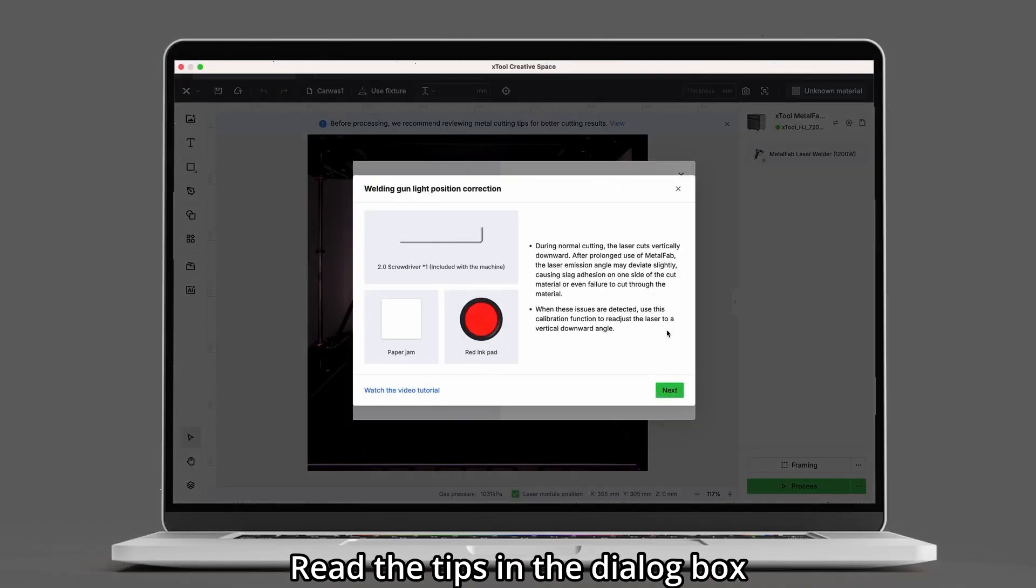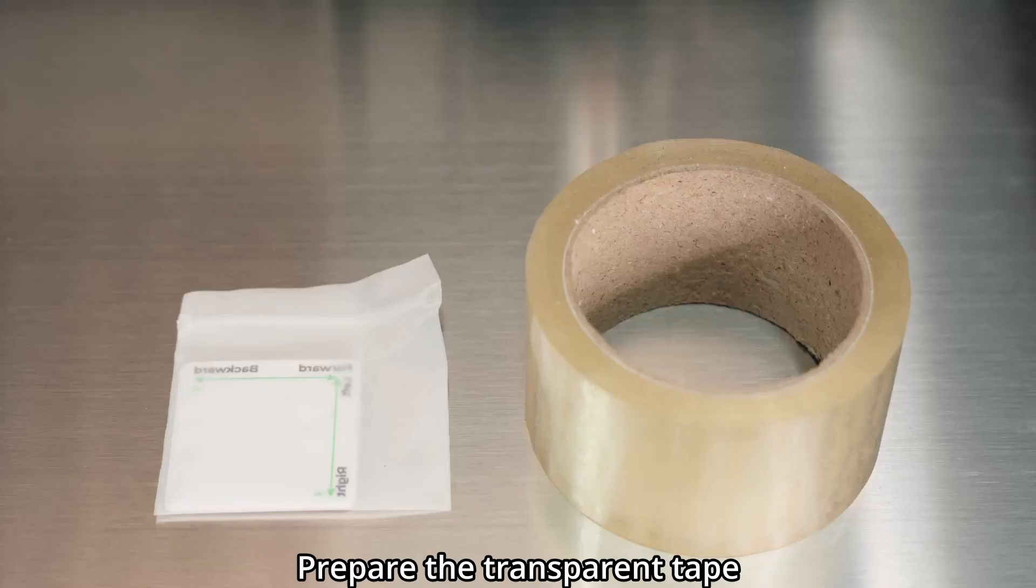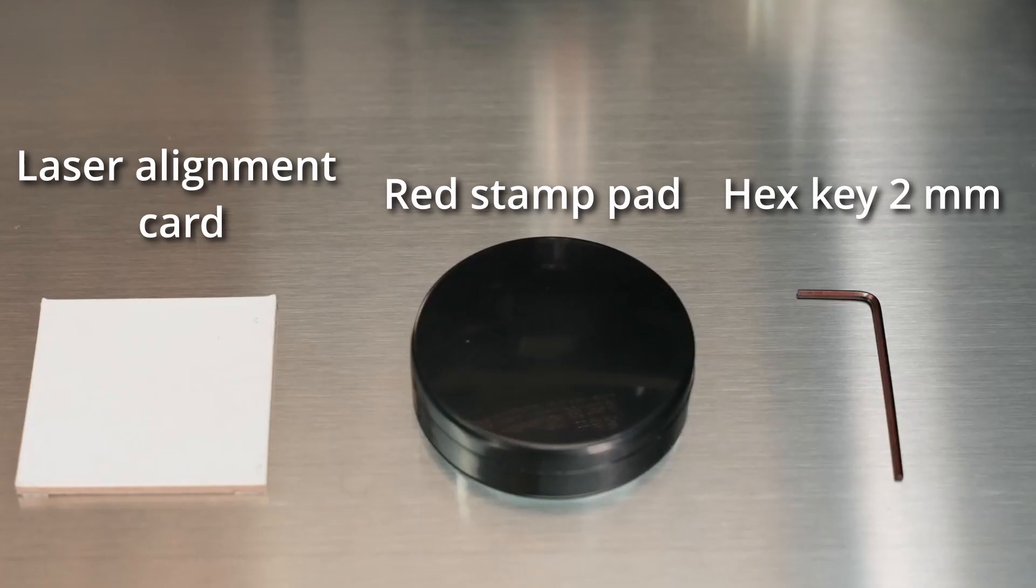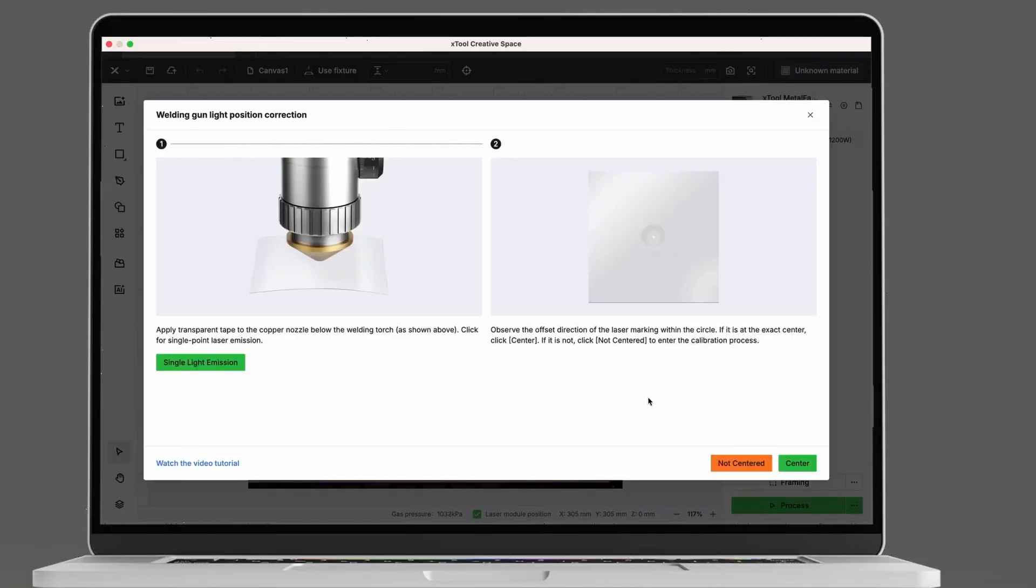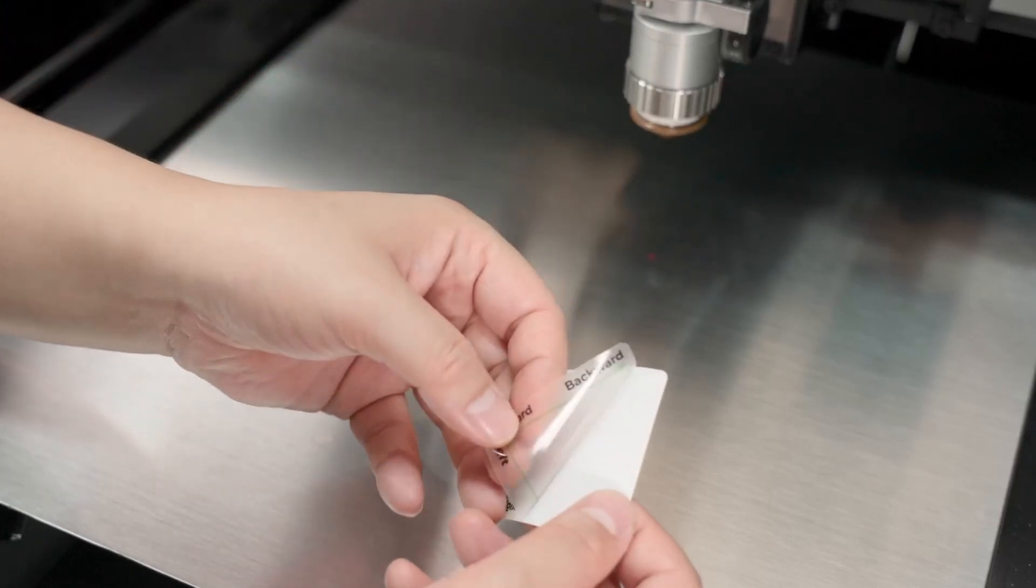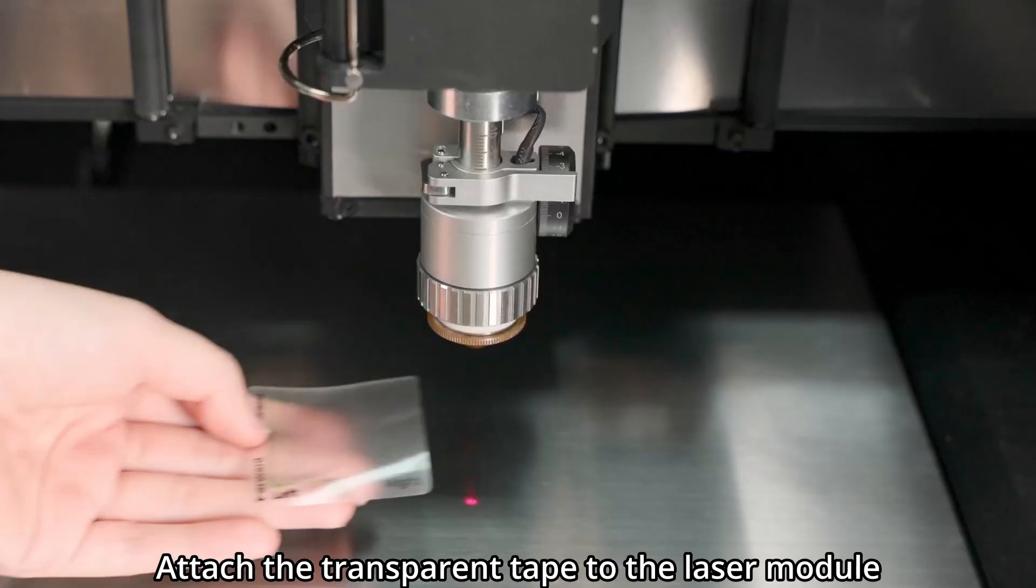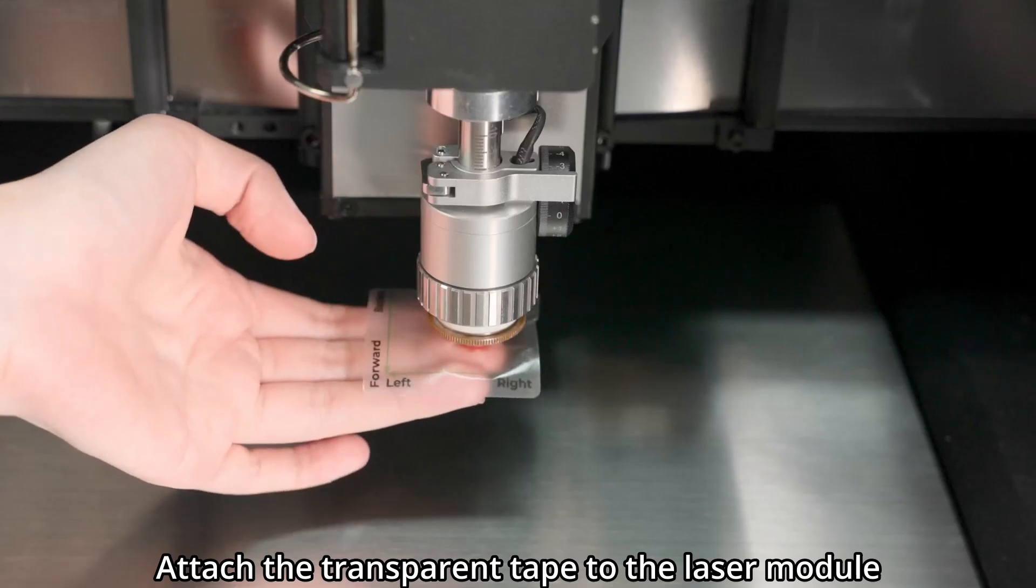Read the tips in the dialog box, prepare the transparent tape. Click Next. Follow the tips in the dialog box, peel off the transparent tape, attach the transparent tape to the laser module.